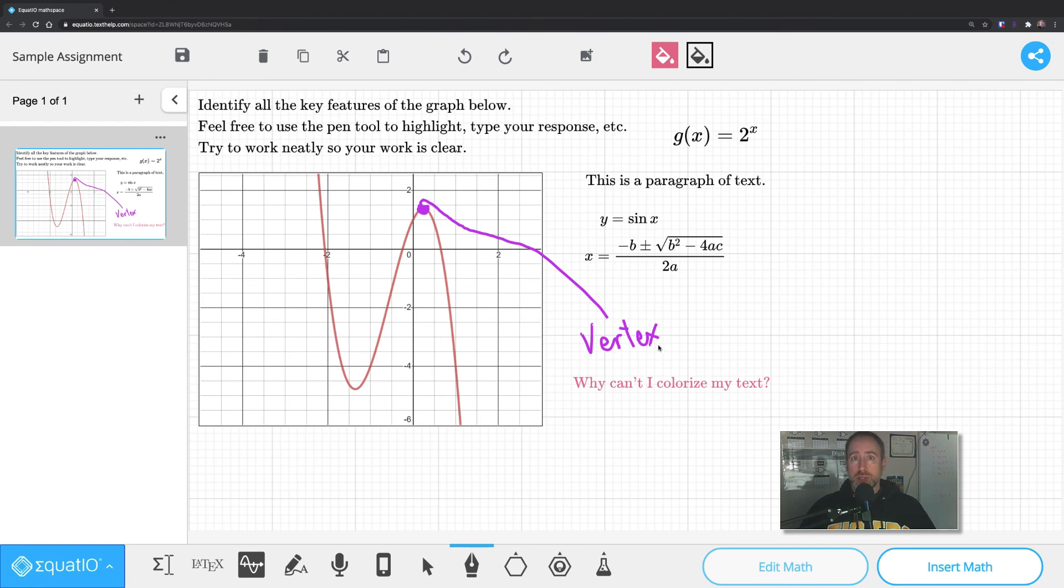Once you're done, if this was an assignment that was given to you by your teacher, this blue button up here won't say share. It'll be a paper airplane. It'll say submit or something along those lines. And that's how you create a submission for your teacher to see your work once you're done. If you have any questions, you can certainly contact me.